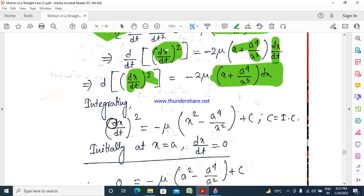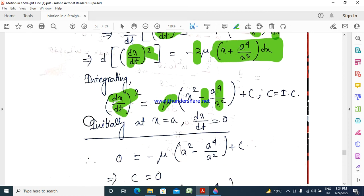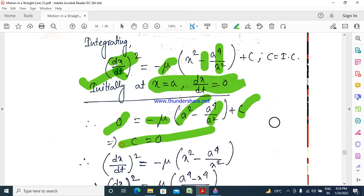Integrating, dx dt squared equals minus mu into x squared by 2 plus a to the power 4 by x squared, that is minus 2 a to the power 4 by x squared plus c. When x equals a, dx dt equals 0, so c equals 0.